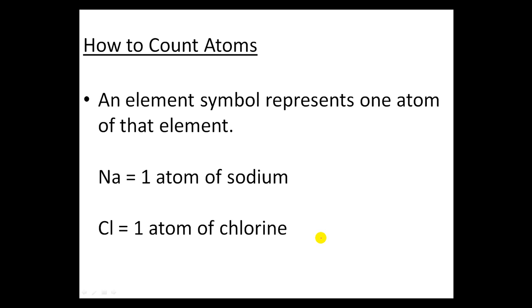The first rule on counting atoms is that anytime you see one symbol it represents one atom of that element. For instance, Na is one atom of sodium, Cl is just one atom of chlorine.